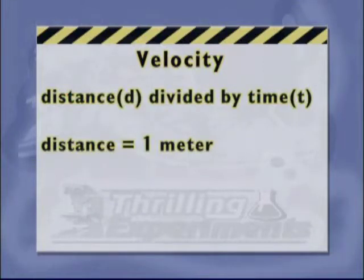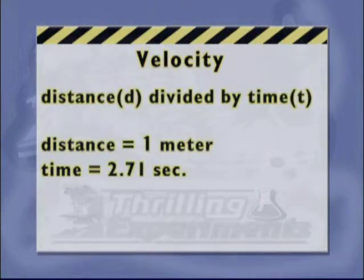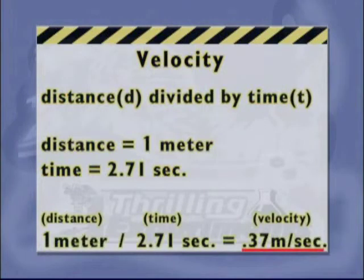For our equation, the basketball took 2.71 seconds to roll down the ramp. Take the distance, one meter, and divide it by the time, 2.71 seconds. The velocity for our basketball is 0.37 meters per second.